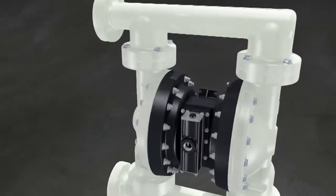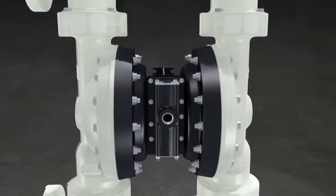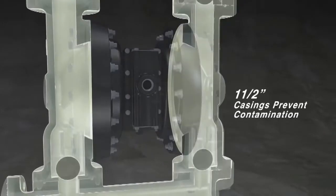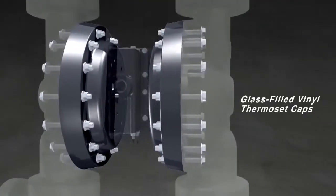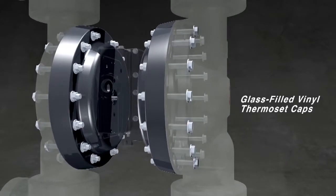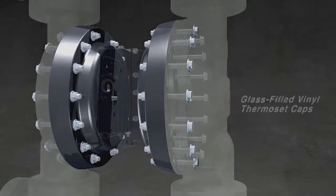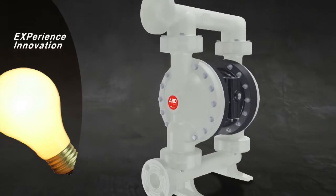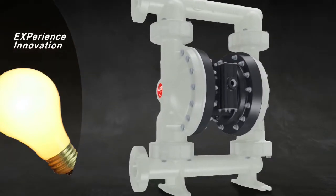Our 2-inch EXP pump houses even more safety details like 1.5-inch thick casings and vinyl ester thermoset caps that form a virtual shield between your equipment and your crew.